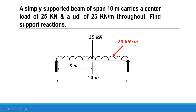This means that for one meter length the load acting is 25 kilonewton. Since it is a rectangular or uniform distribution, we will need to convert this uniformly distributed load into a point load. So if for one meter the load is 25 kilonewton, then for 10 meters it will be 25 multiplied by 10, acting at the centroid of the rectangular distribution, that is the center point.